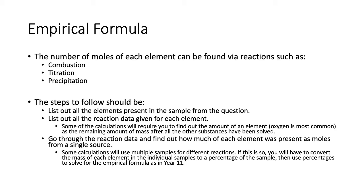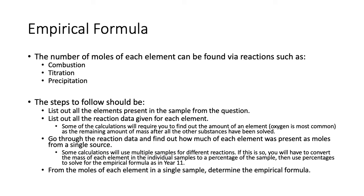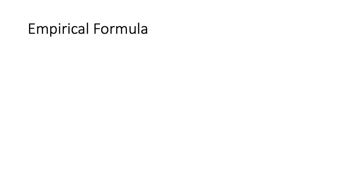In Year 12, you may be using multiple samples from different reactions. If that happens, you have to get results from a single source, which means you have to convert values into percentages. Once you have the percentages, you can convert to a single sample of 100 grams and then solve for the empirical formula — getting the moles of each element.